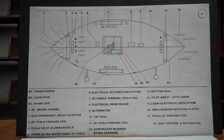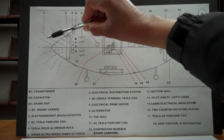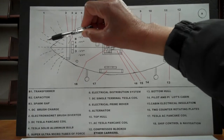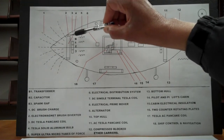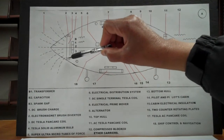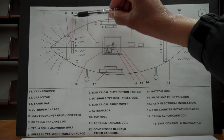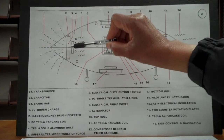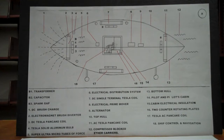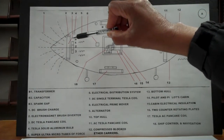Number two is an electromagnetic brush diverter. When the brush sends out voltage charge and this electromagnet comes on, it pushes the brush one way; when the other comes on, it pushes the brush the other way. Number three is a Tesla pancake coil — it is a DC pancake coil with DC potential, high frequency pulsed.